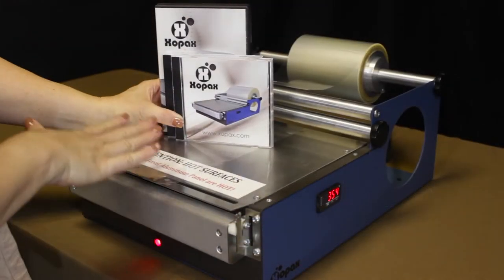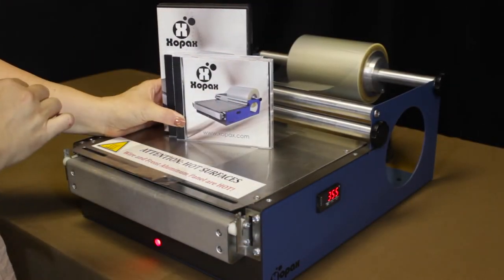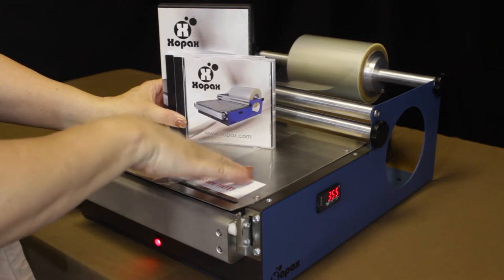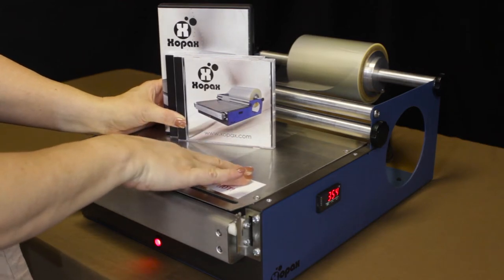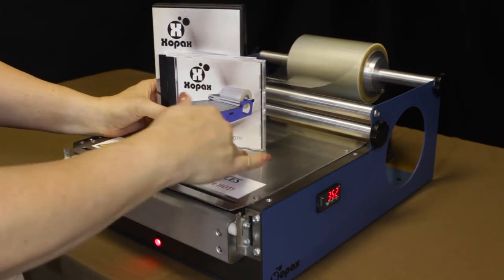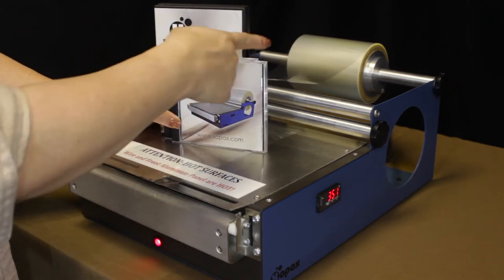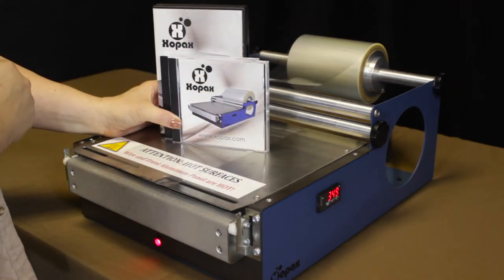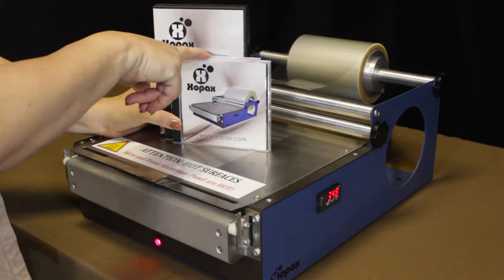So our first solution is going to be just using the machine as is when you purchase it. So right now we're looking at the PXC12. The PX12 would behave in the same manner. I have a CD size roll on there now, that's what I'm going to use to wrap these CD jewel cases.